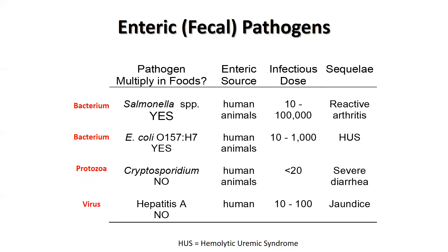This slide shows a few pathogens that have these long-term health effects, whether they can multiply in food, the source, and the estimated infectious dose. Salmonella is a bacteria that can come from either animals or humans. Its infectious dose ranges from 10 to 100,000 cells, and it can lead to long-term reactive arthritis in some individuals. E. coli O157:H7 comes from humans and animals and has an infectious dose of 10 to 1,000 cells. It can lead to hemolytic uremic syndrome, or HUS. E. coli O157:H7 produces a toxin as it grows in our intestine that can be transported via the blood to the kidneys, leading to catastrophic damage of the kidneys — which is what causes death in individuals that pass away from an E. coli O157:H7 infection.